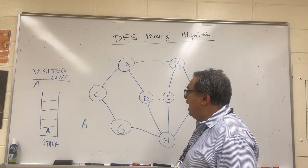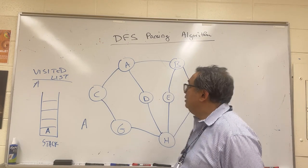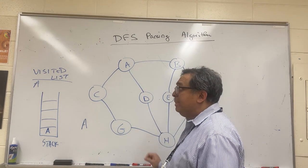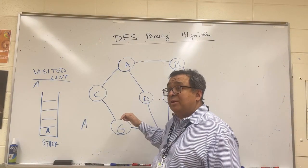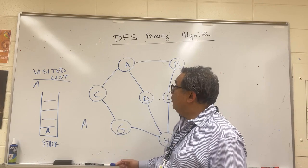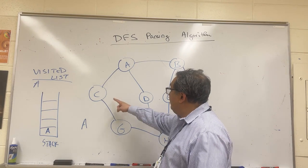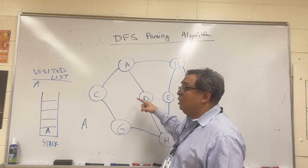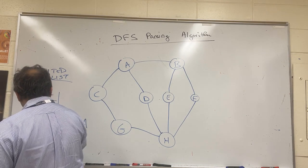We put A in the stack and in the visited list, then ask: does A have any neighbors — edges — that have not yet been visited? Yes, it has three: nodes B, C, and D. We need to pick one. I'll add an additional rule: when multiple nodes are available, visit them in alphabetical order. So B comes first, and we go visit B — push it onto the stack.